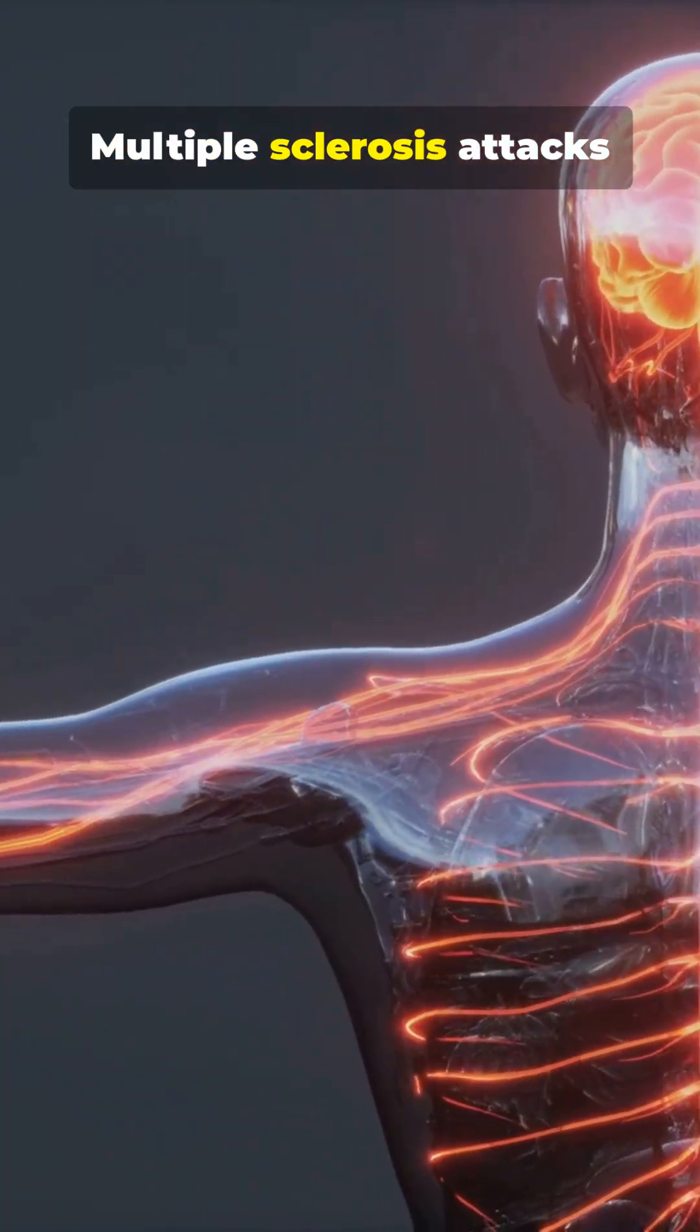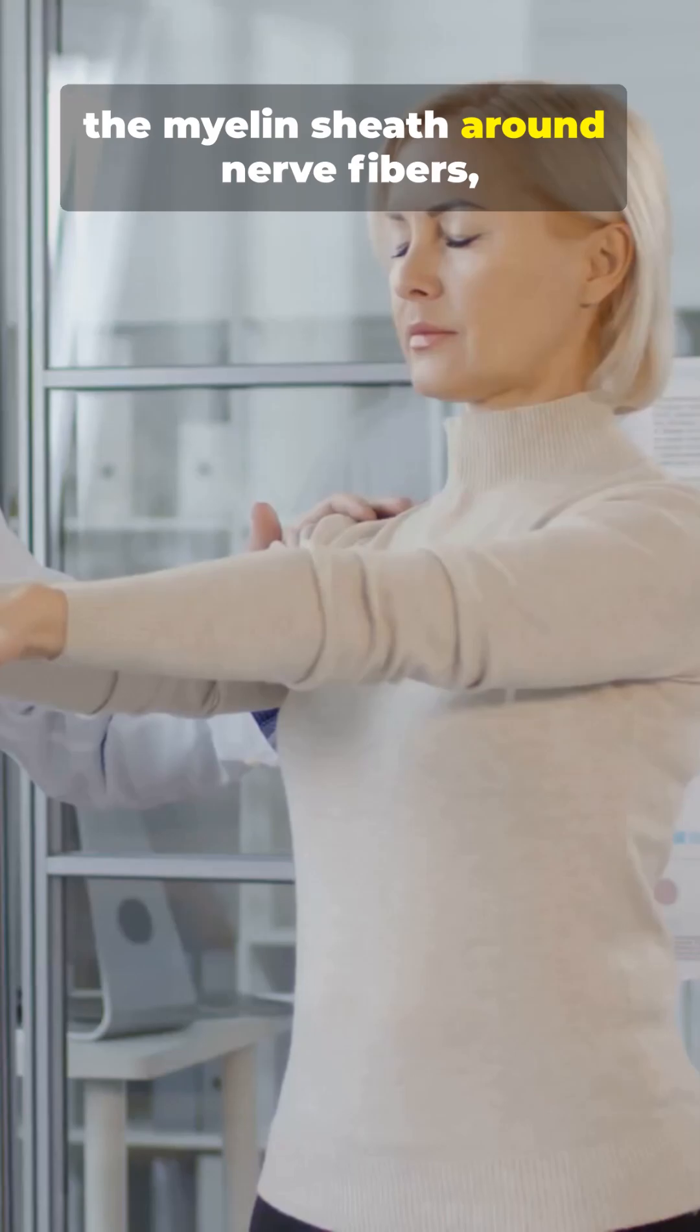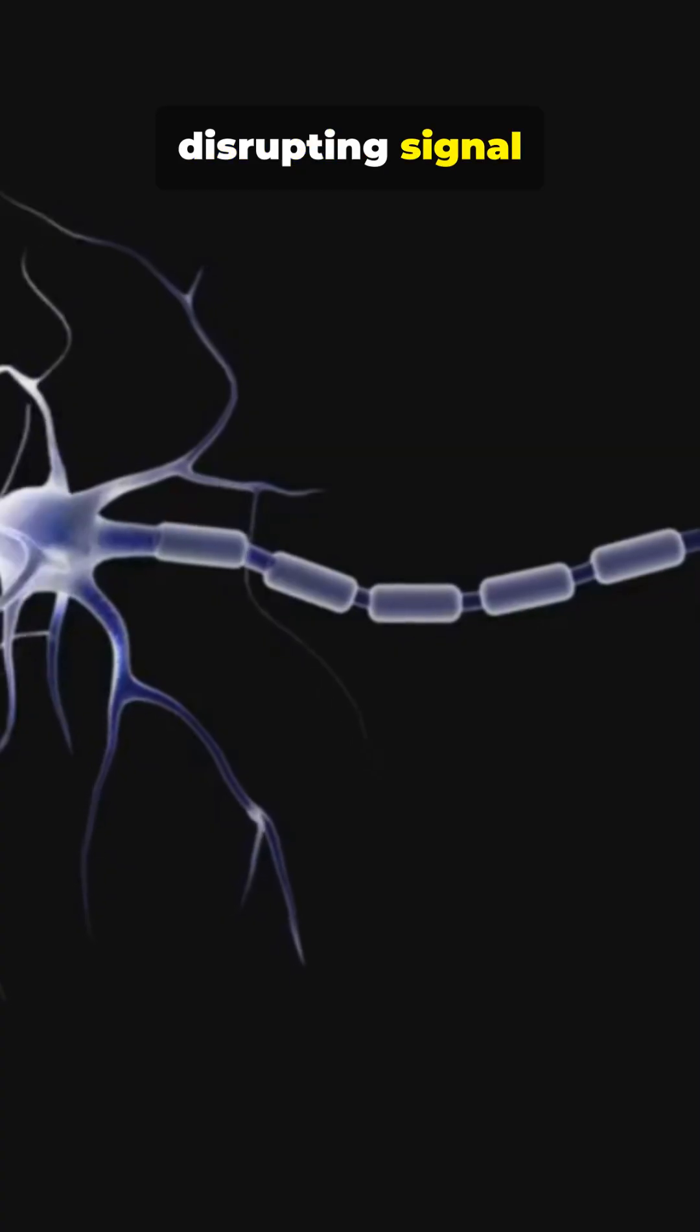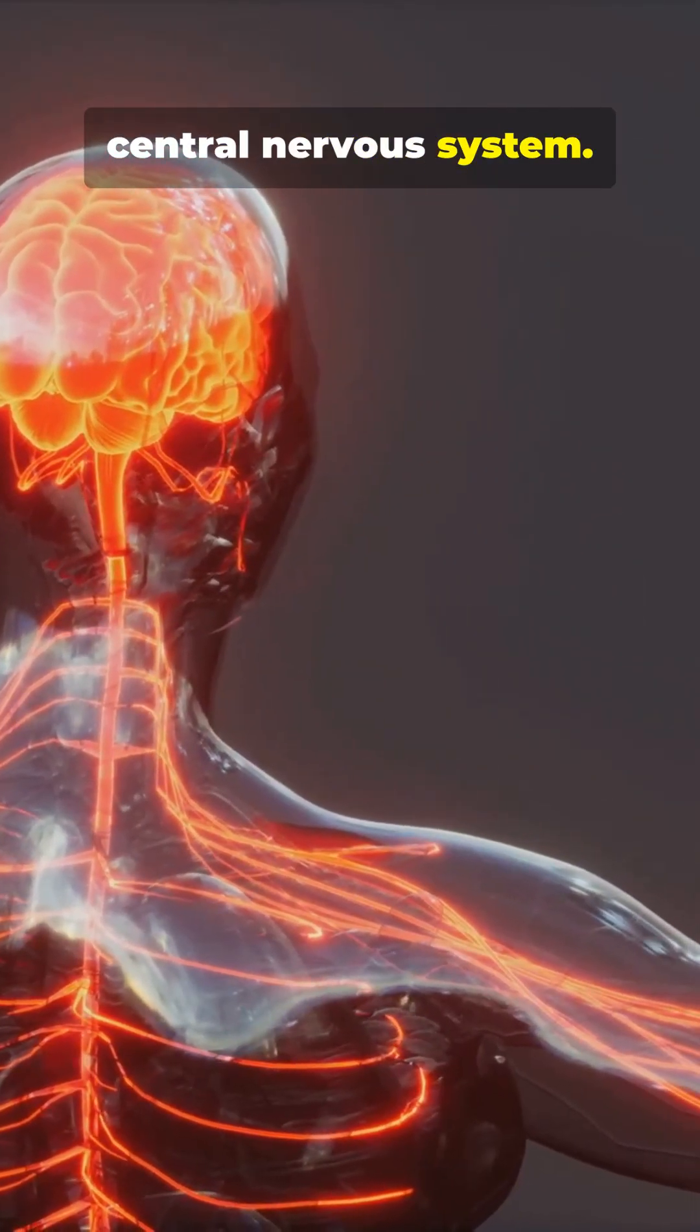Multiple sclerosis attacks the myelin sheath around nerve fibers, disrupting signal transmission throughout the central nervous system.